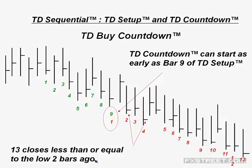Once we achieve the Setup stage — numbers one through nine, measuring momentum — we go into the final Countdown stage counted between one to thirteen. The Countdown is not a consecutive count; each bar compares the close to the low or high two bars previously. Specifically: thirteen closes less than or equal to the low two bars ago. This can be used on intraday, daily, weekly, and monthly charts. The final signal is the red thirteen, and that's what people look for in the market.